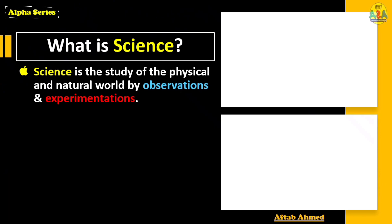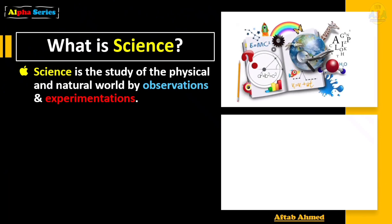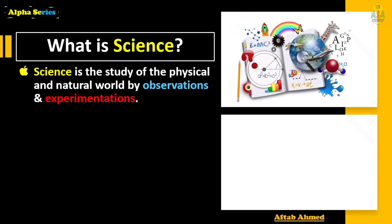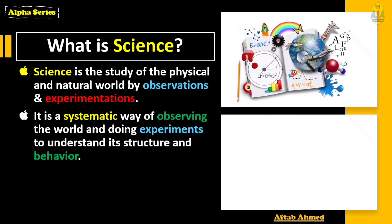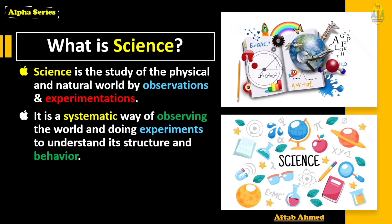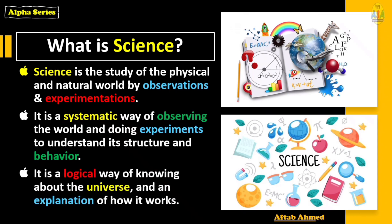Science is the study of the physical and natural world by observations and experimentations. That means in science two things are very important: number one, observations; number two, experimentations. It is a systematic way of observing the world and then doing some experiments to understand its structure and behavior. It is a logical way of knowing about the universe and giving an explanation of how it works.